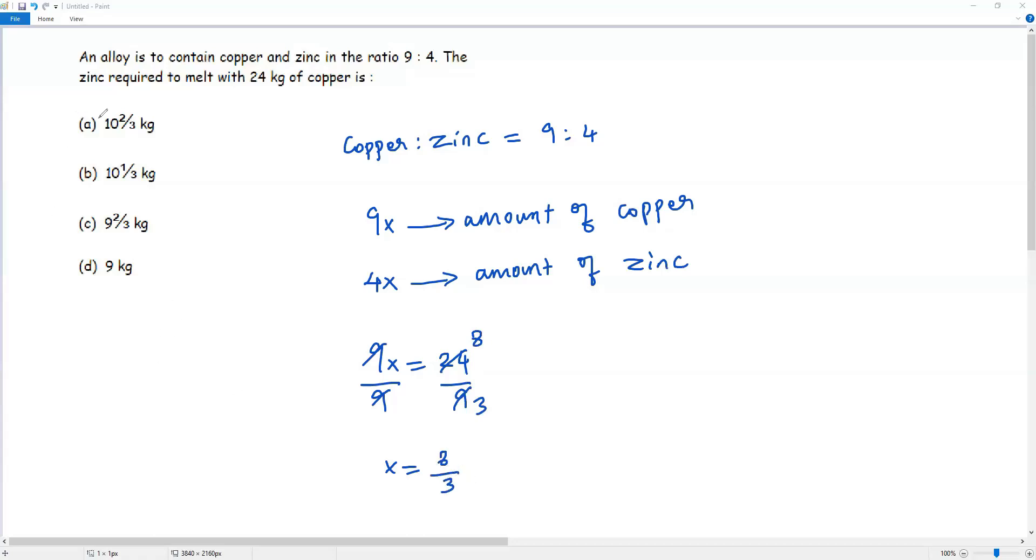My target is to find the amount of zinc required to melt with 24 kilograms of copper. That is, I have to find the amount of zinc in the alloy. To find the amount of zinc, I have to plug in x equals 8 over 3 into 4x, because 4x refers to the amount of zinc.